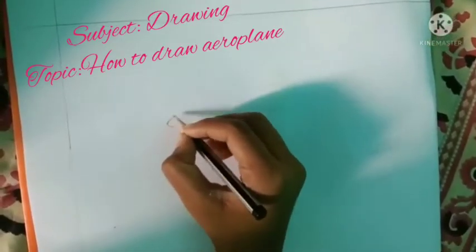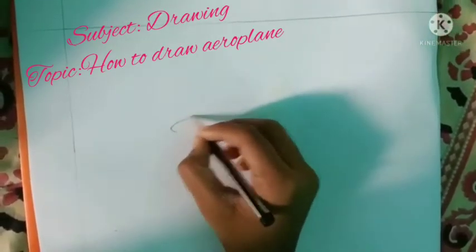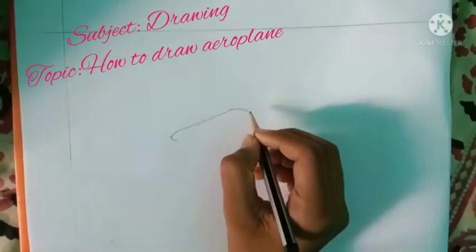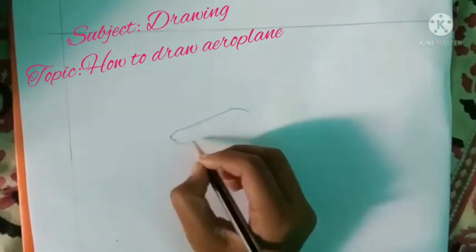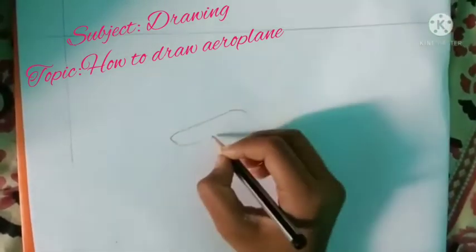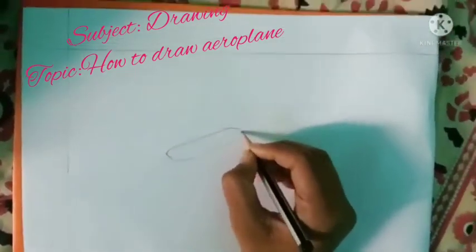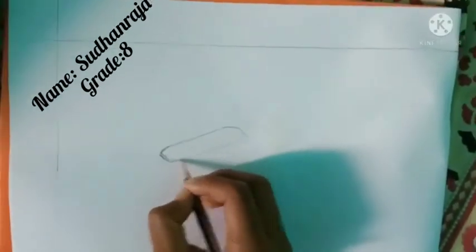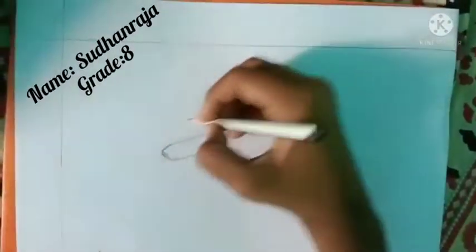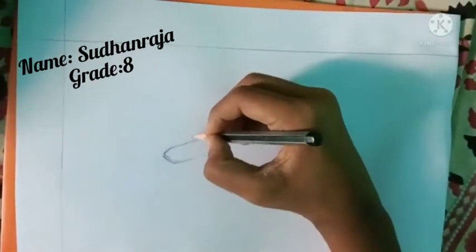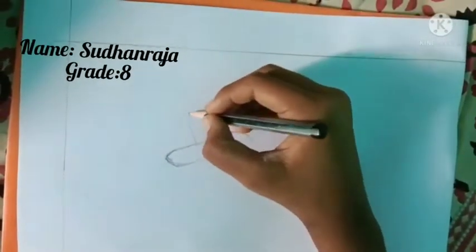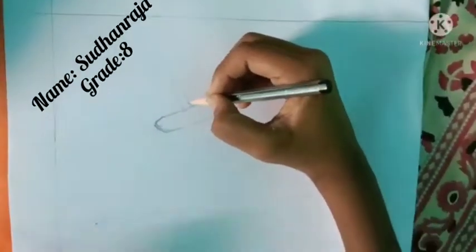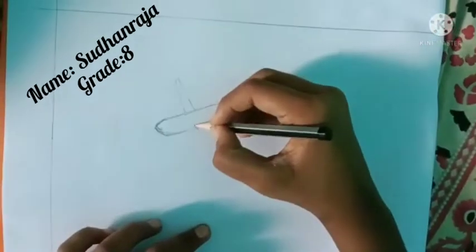Now we are going to draw an aeroplane. First we want to draw an oval shape like this. Next we want to draw the wings of the aeroplane.